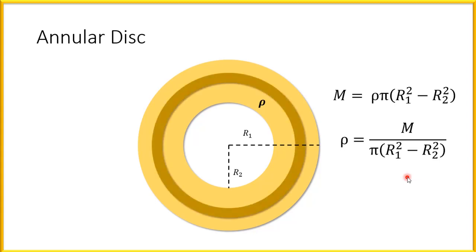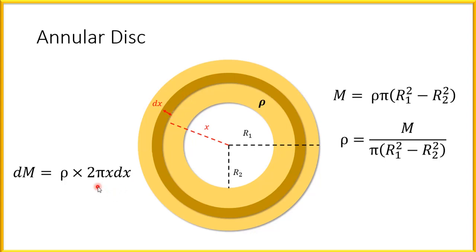Now consider a very small area inside this annular disc at a distance x and having a thickness dx. We can find the mass of this small shaded portion as the mass density into the area of that portion. The area is the circumference of the circle multiplied by its thickness: the circumference of the circle of radius x is 2 pi x, so the area is 2 pi x dx. Multiplied by mass density rho, this gives the mass of the small shaded annular ring.